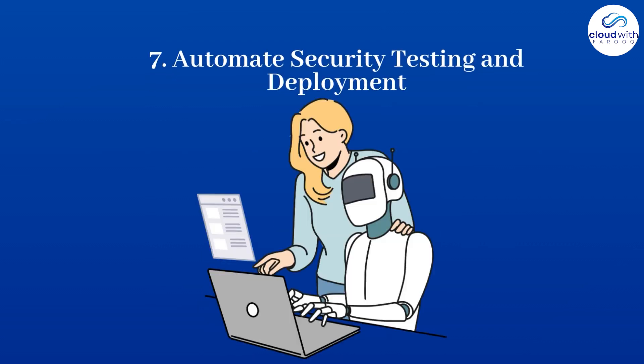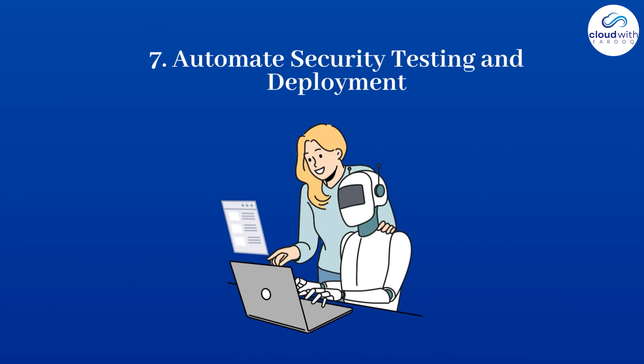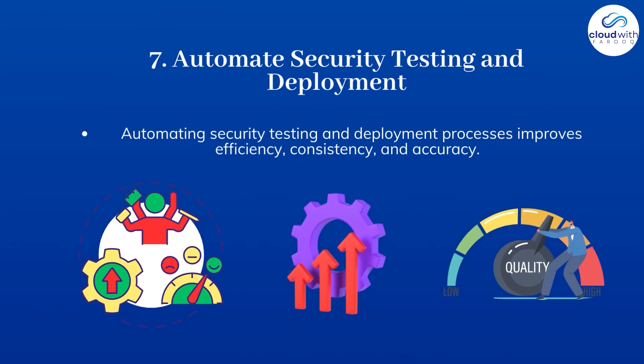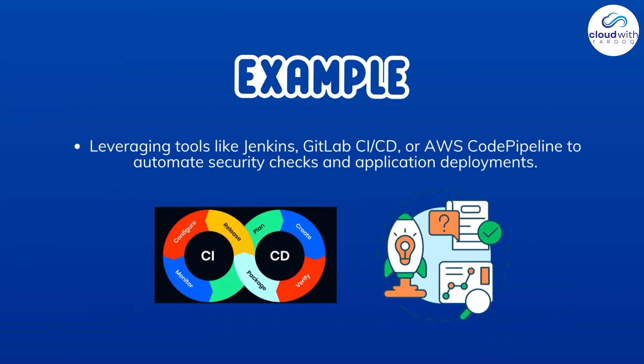Number 7: Automate security testing and deployment. Automating security testing and deployment processes improves efficiency, consistency, and accuracy. For instance, leveraging tools like Jenkins, GitLab CI/CD, or AWS CodePipeline to automate security checks and application deployments.